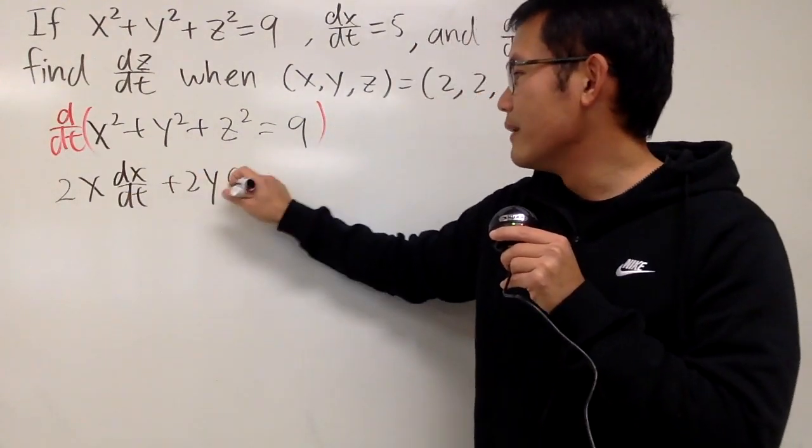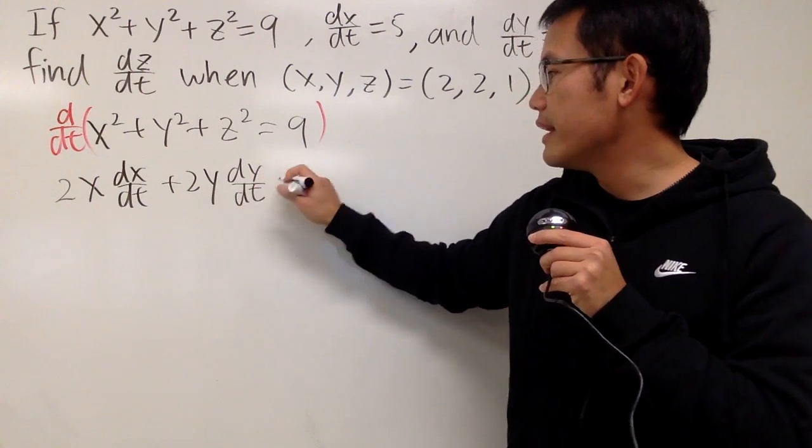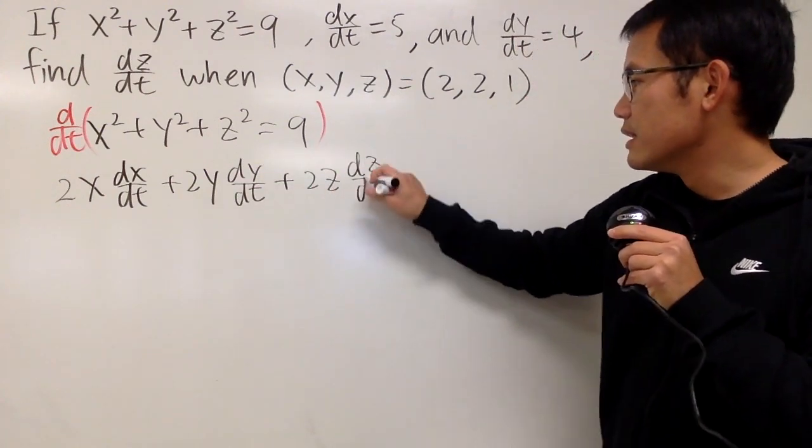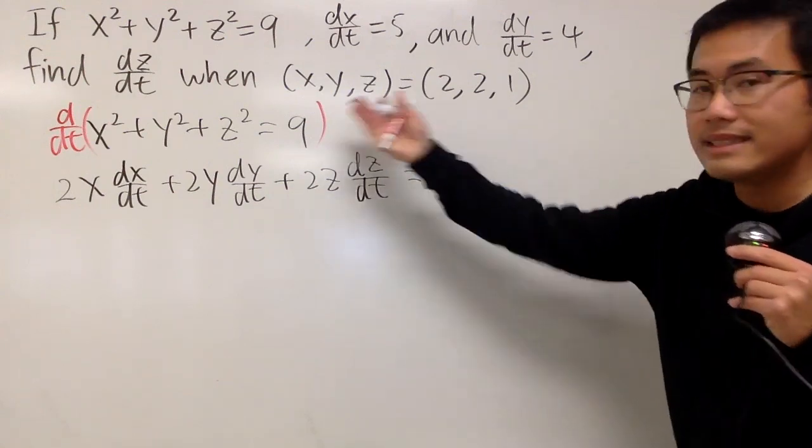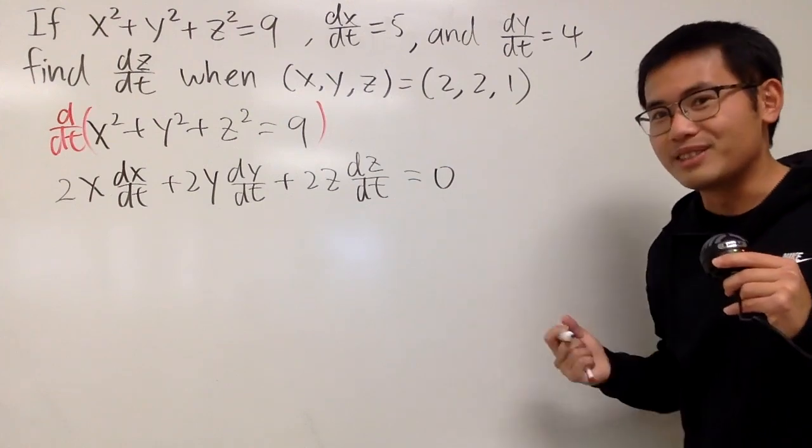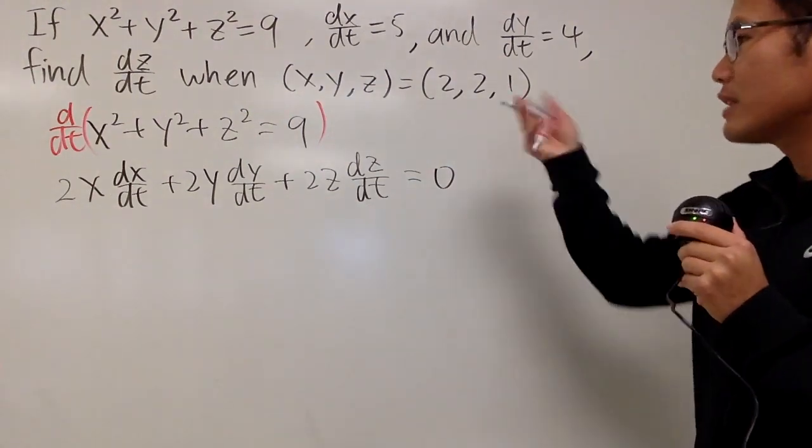The next one is plus 2y dy/dt, and then this one is 2z dz/dt, and we also know that the derivative of 9 is, of course, just the derivative of 0. The derivative of a constant is just 0. And now, we just have to plug in numbers.